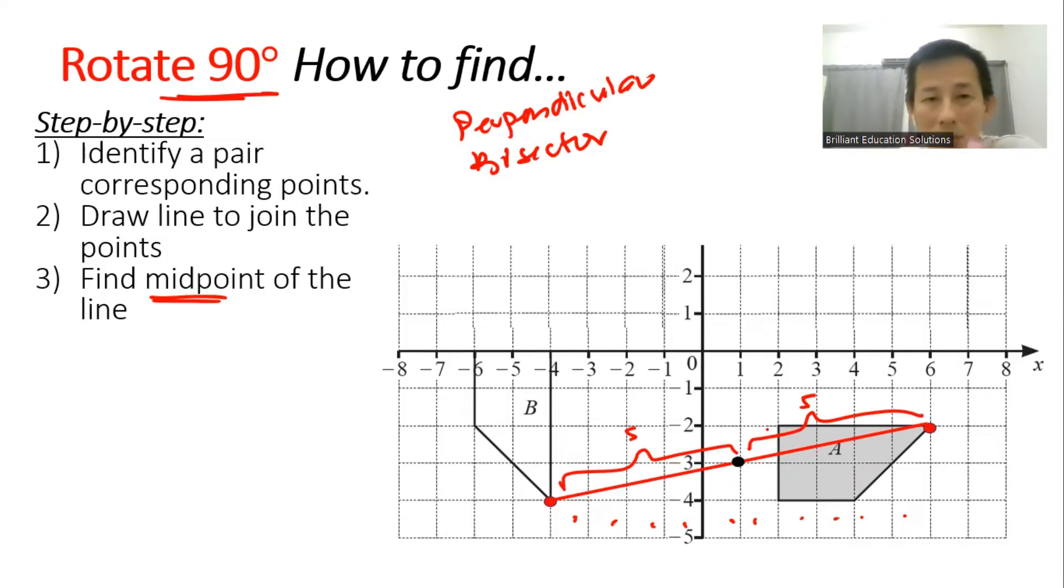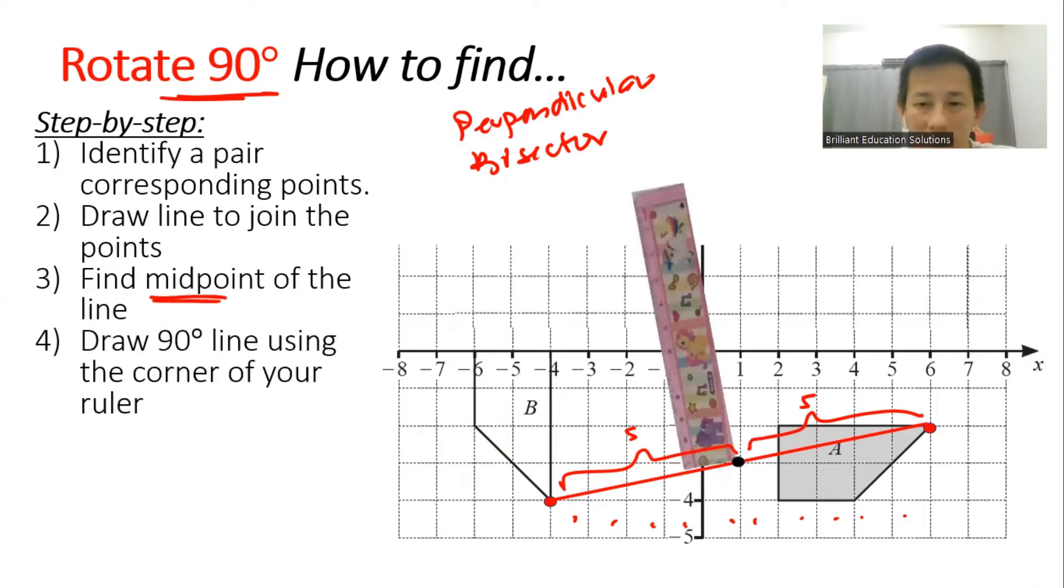To use a ruler to draw the perpendicular bisector, we use the corner of the ruler. Just put it like this, and then draw a line.